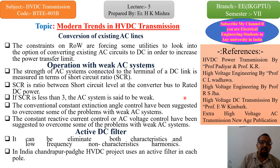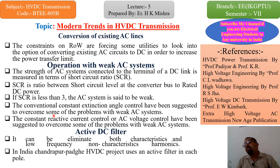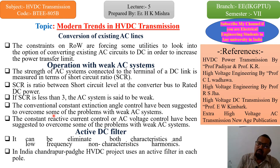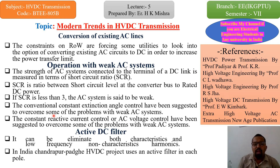Constant reactive current control or AC voltage control have been suggested to overcome some of the problems with weak AC systems। Reactive part is totally dependent on frequency — AC case में frequency F होता है, DC case में F is equal to 0। तो DC के case में frequency होगा ही नहीं, इसलिए constant reactive current control और AC voltage control उन problems को overcome करने के लिए use किया जाता है जो weak AC system में आती हैं। उसके बाद है active DC filter।